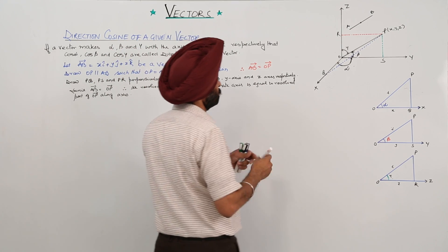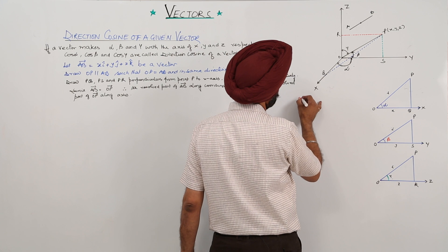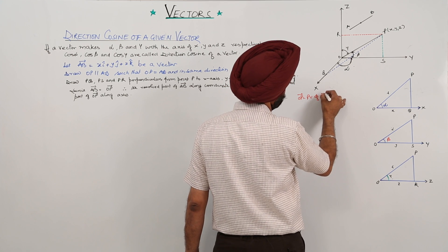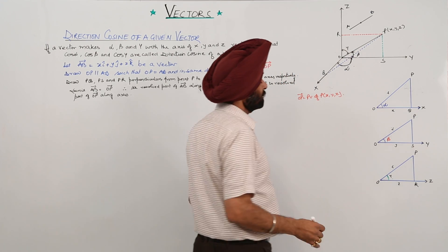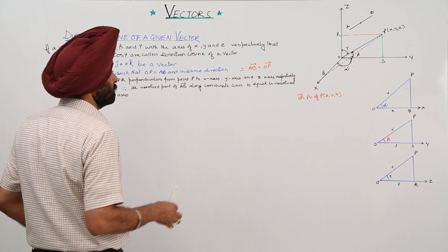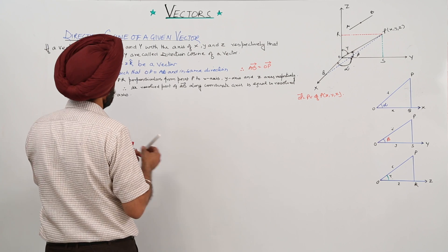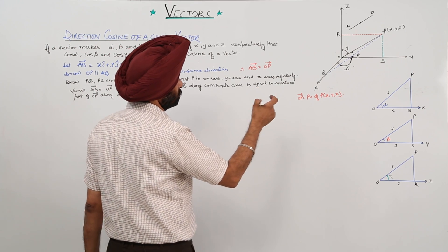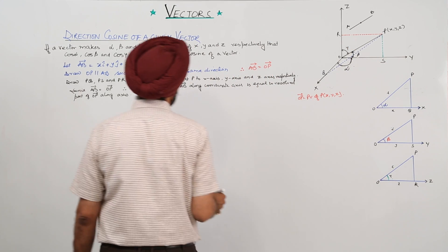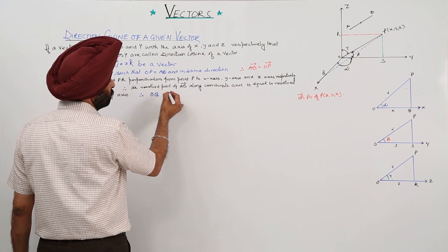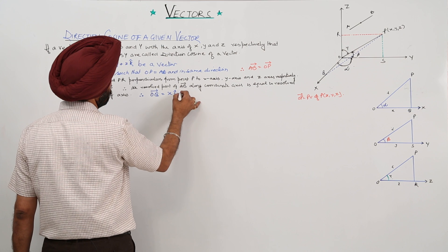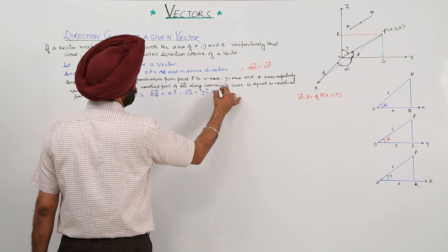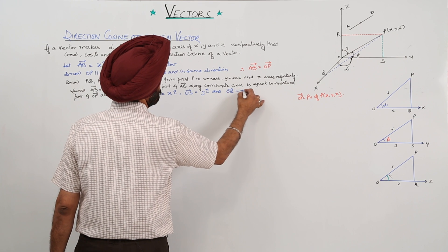OP is equal to the position vector of P, that is (X, Y, Z). We are having OQ, OS, and OR. Therefore, vector OQ is equal to XI cap, vector OS is equal to YJ cap, and vector OR is equal to ZK cap.